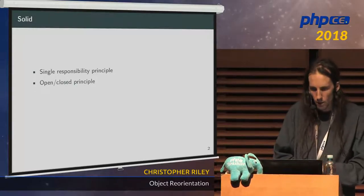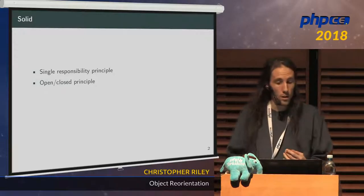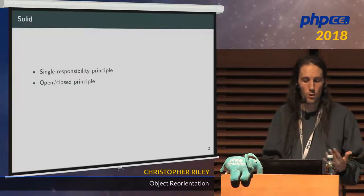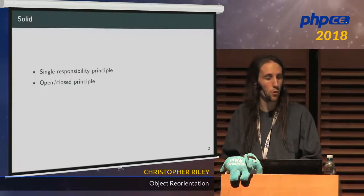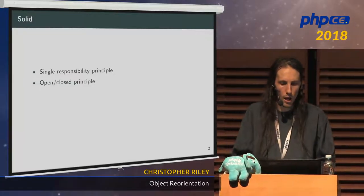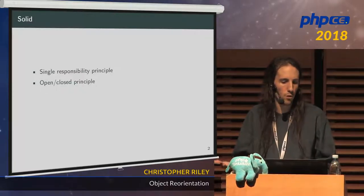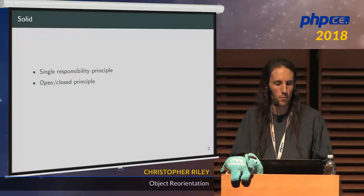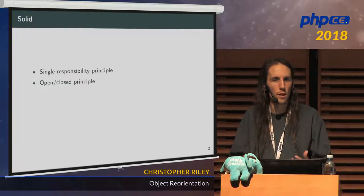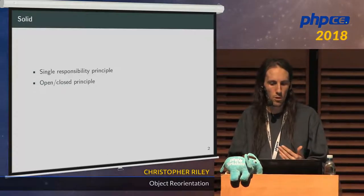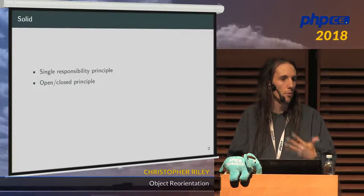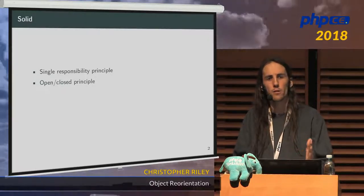The O in SOLID stands for the Open Closed Principle. There are two definitions for this one. The first is the idea that a class or module can either be open — so you can add new functions to it — or closed, if it is available for other modules in your system to depend upon, so you shouldn't change it if there are things depending on it. The second definition applies to polymorphism: the interface of a module is closed for modification, but you can change the implementation of those interfaces. The implementation is open for modification, but the external interface is closed.